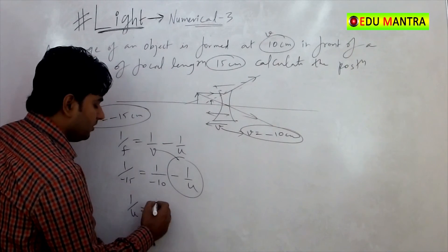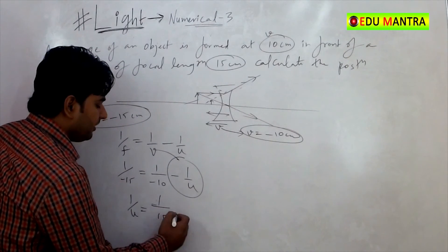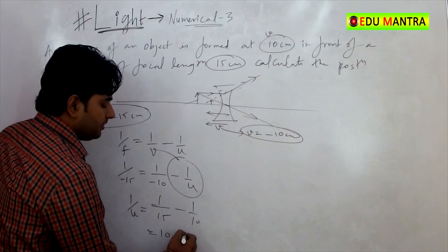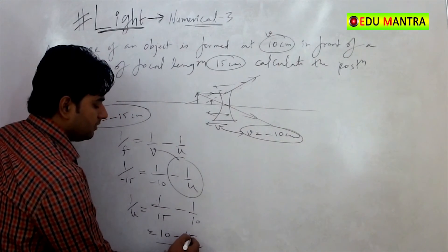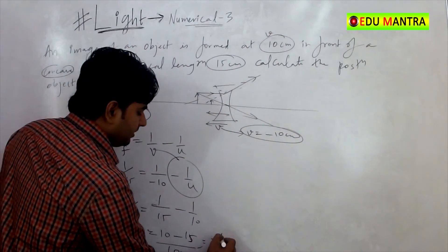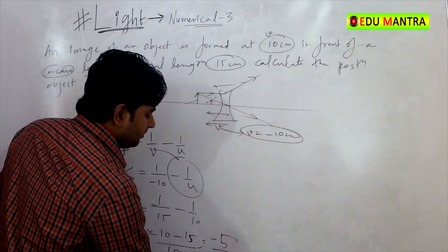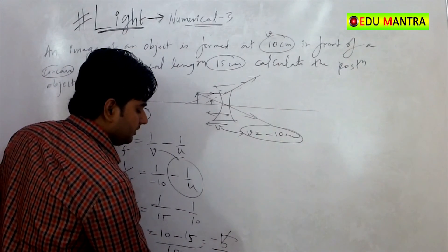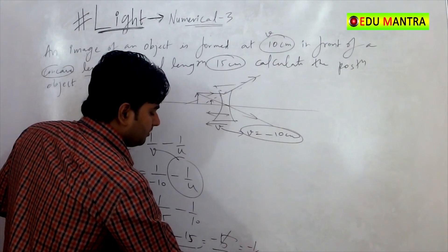So that's 1 by U is equal to 1 by 15 minus 1 by 10. It will be 10 minus 15 by 150. So minus 5 by 150. So that's minus 1 by 30.